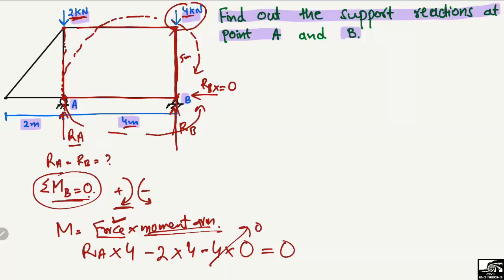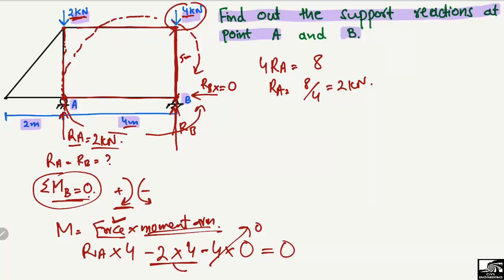Setting the summation of moments at B equal to zero: the 4 kN term drops out (4 × 0 = 0). Solving: Ra × 4 = 2 × 4, so 4Ra = 8, giving Ra = 8 ÷ 4 = 2 kN. Therefore the support reaction at A is 2 kN.